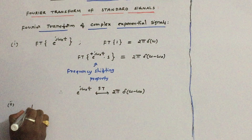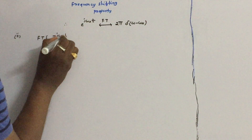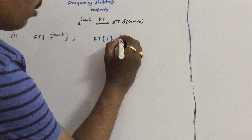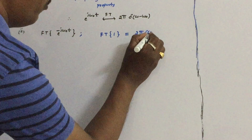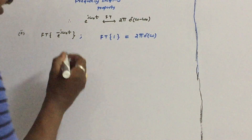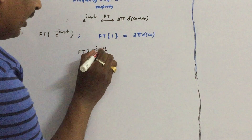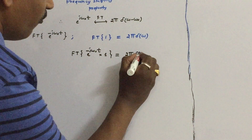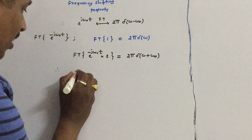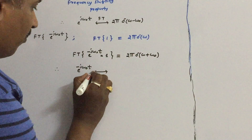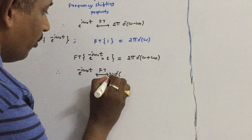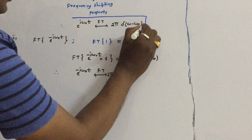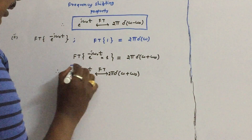Now let us find the Fourier transform of e^(−jω₀t). Again, first find the Fourier transform of the constant, which is 2π·δ(ω) from the duality property. Here a negative frequency term e^(−jω₀t) is multiplied, so use the frequency shifting property. Therefore, the Fourier transform of e^(−jω₀t) is 2π·δ(ω+ω₀). These are the two important formulas for complex exponential signals that you must remember.